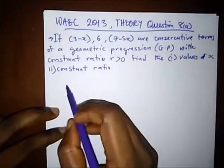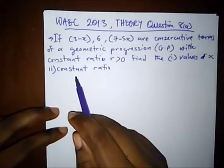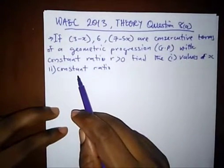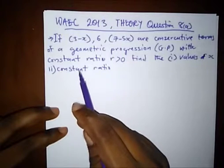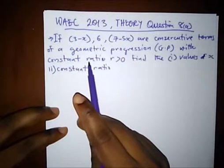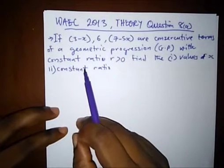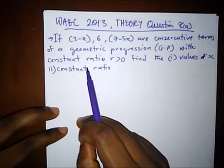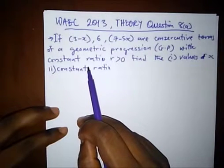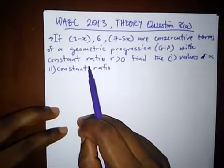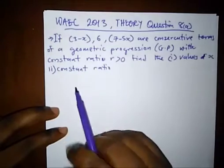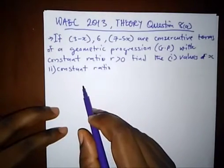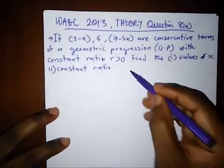The question says: if (3 minus x), 6, (7 minus 5x) are consecutive terms of a geometric progression with constant ratio less than 0, find (1) the values of x, and (2) the constant ratio.